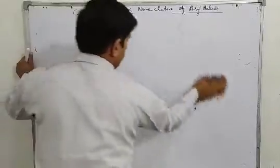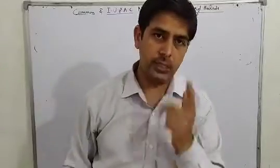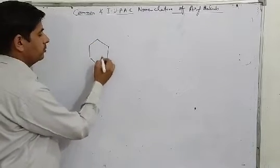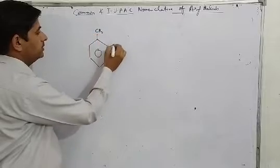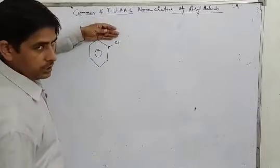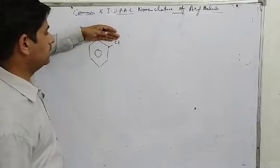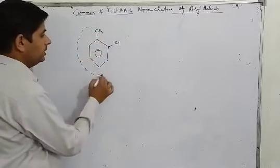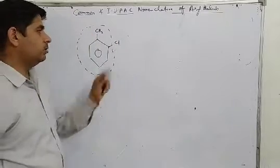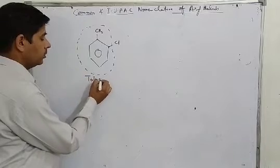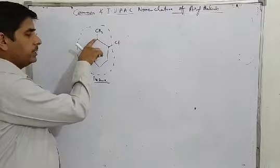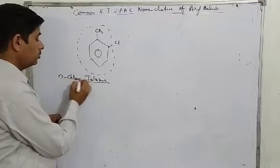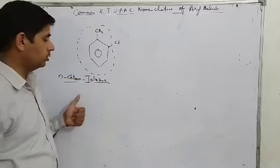Sometimes in aromatic halogen compounds an alkyl group is also attached. For example, suppose we have a benzene ring with Cl — if there were only Cl it would be chlorobenzene, but now we also have CH3. If I remove the Cl, what remains is toluene. Since Cl is at the ortho position relative to CH3, it will be called ortho-chlorotoluene.